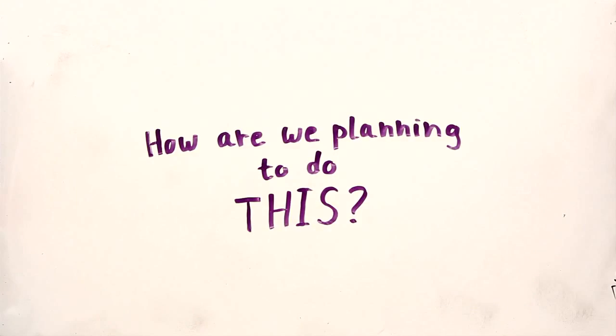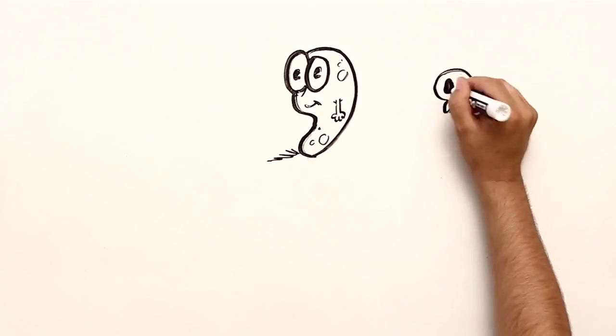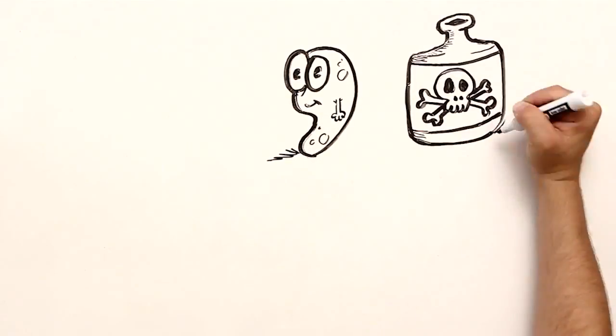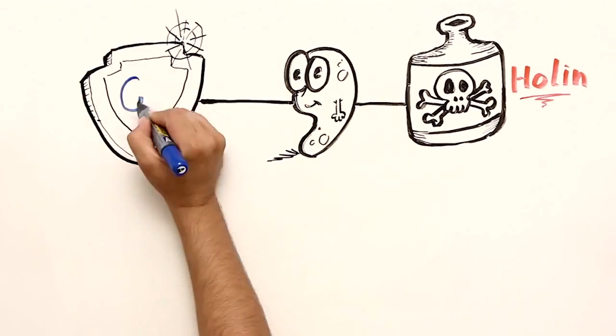How are we planning to do this? We are designing two different products. In the first, we take a bacteria and add two new elements to it. One is bad, a gene that constantly produces a poison, and one is good, a protective protein produced only in the lab.